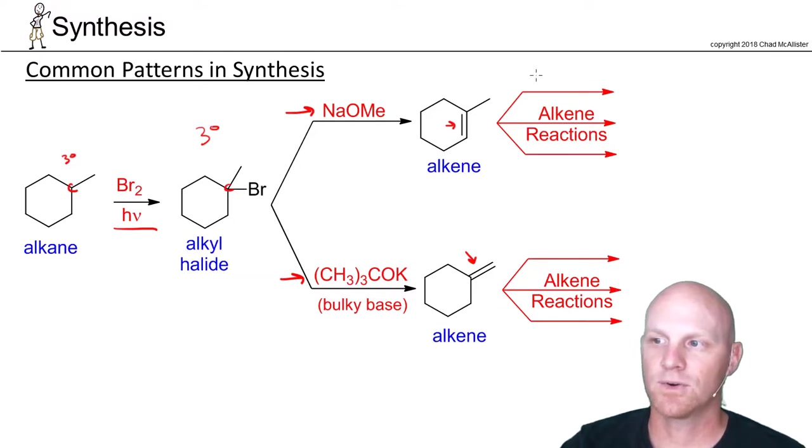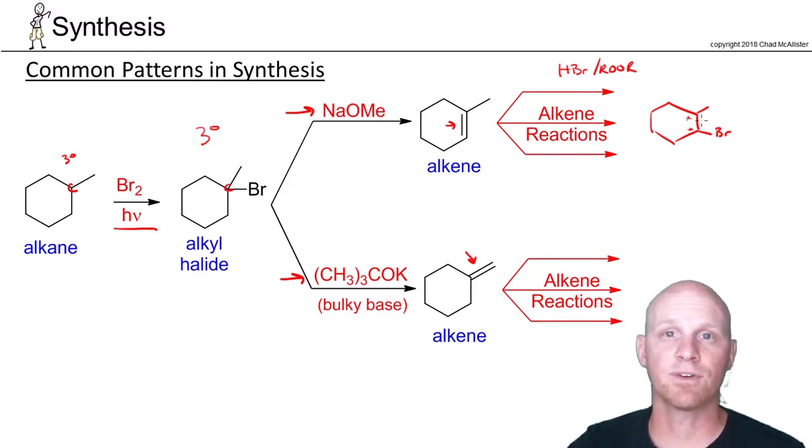So notice here, maybe I do HBr with peroxide, and that adds H and Br anti-Markovnikov. And so in this case, we'd get the bromine ending up on the less substituted side. In this case we do form chiral centers, and there's no stereoselectivity, so we actually get a mixture of four different stereoisomers.